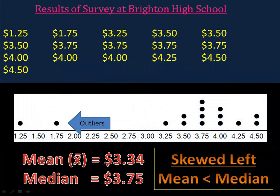Here we find that the mean is $3.34 and the median is $3.75. Our dot plot shows us that we have a couple of outliers, $1.25 and $1.75. The data is skewed to the left because that's the direction of the tail. The mean is less than the median.